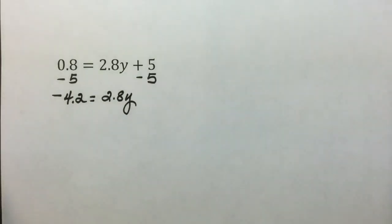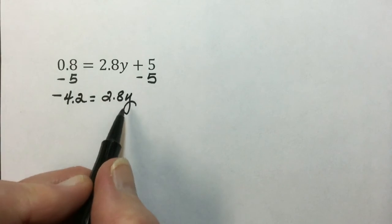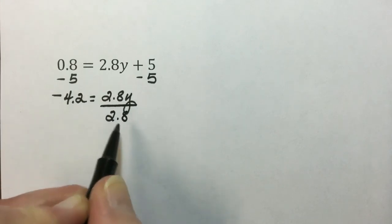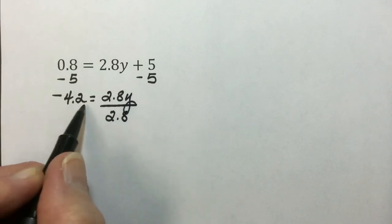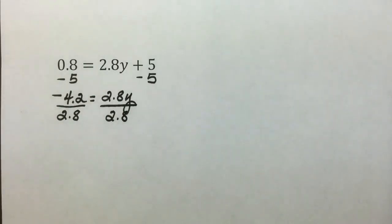The last operation to undo to have a coefficient of 1 on the y is to divide both sides by 2.8 to undo that multiplication, maintaining equality. And then do the indicated operation.